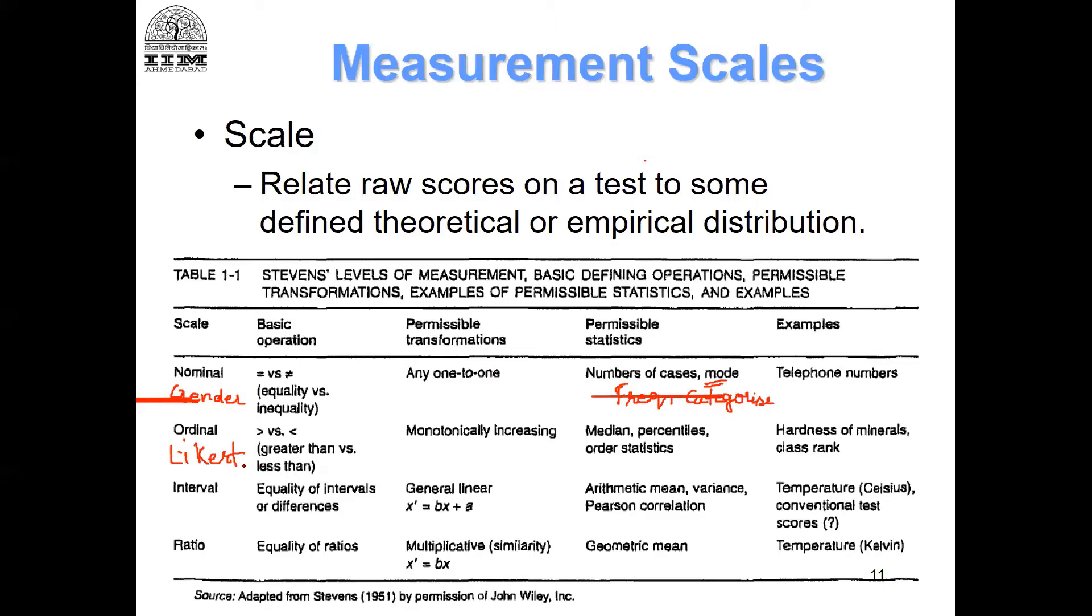A Likert scale has numbers that are also ordered. One is less than two, two is less than three, three is less than four, four is less than five. However, in an ordinal scale you cannot say that the difference between one and two is the same between two and three, the same between three and four and five. The distances may not be done - the differences may not be the same.